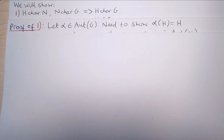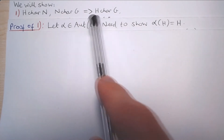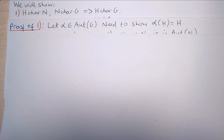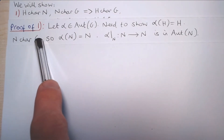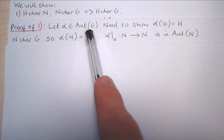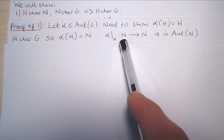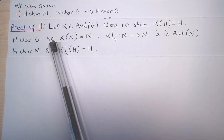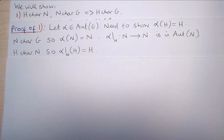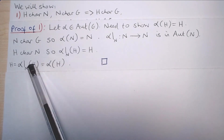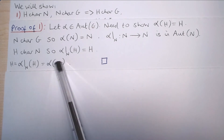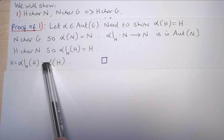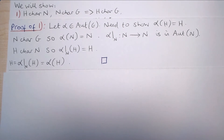For the proof of the first part, let alpha be an automorphism of G. To show that H is characteristic in G we have to show that it is fixed under this automorphism alpha. We have that N is characteristic in G by assumption, which says that alpha of N fixes N. Note that the restriction of alpha to N actually defines an automorphism of N. Then because H is characteristic in N, the restriction of this automorphism fixes H. But the image of H under this restriction is just equal to the image of H under the original automorphism alpha. So H is fixed by alpha — in other words, H is characteristic in G.